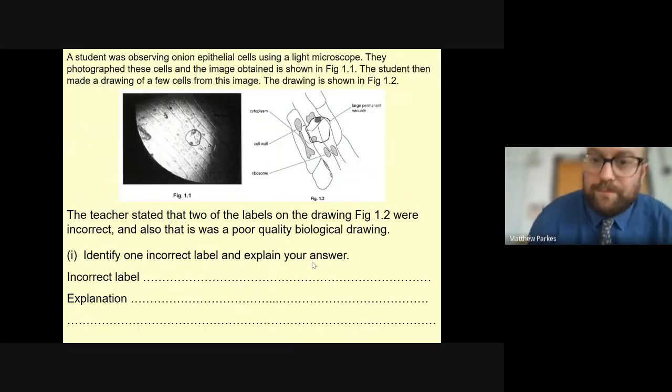From that, what I'd like to do is have a look at this typical example of an exam question. A student was observing onion epithelial cells, just like we've done on the microscope here, and they photographed it. We've got the image that they photographed on the left and the drawing that they made on the right. Based on those rules that you've just seen, I'd like you to have a go. You can pause the video if you like. There is one incorrect label, so you get one mark for an incorrect label and one mark for an explanation as to why that label is incorrect. Have a think, have a go, and then we'll go on through and answer.